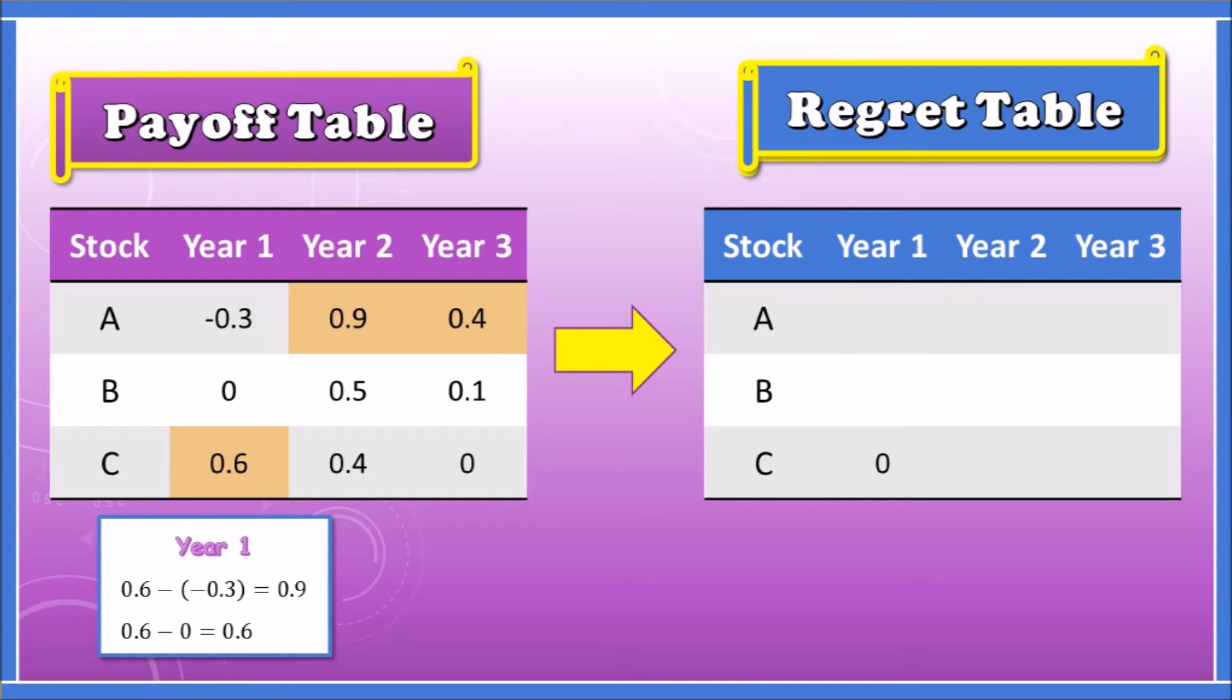So what I did on the right-hand side, you can see at Year 1 we had 0.6 minus negative 0.3 is 0.9. This is how much we would have regretted. And for stock B, we would have regretted 0.6 minus 0 which is 0.6. As you see in the table, this is the regret table.